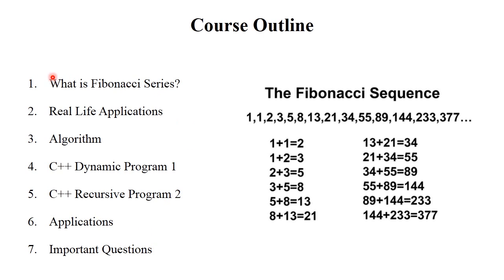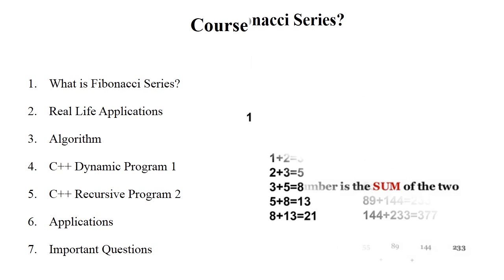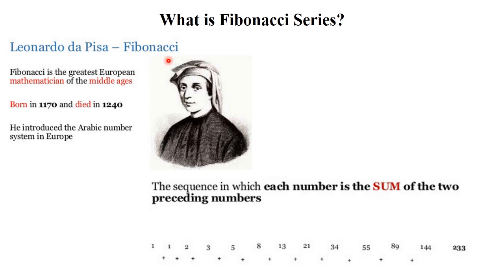Fibonacci series was invented by Leonardo da Pisa. Fibonacci was the greatest European mathematician of the Middle Ages, born around 1170 and died in 1240. He introduced the Arabic number system in Europe. So what exactly does Fibonacci series mean? Fibonacci series is the sequence in which each number is the sum of the two preceding numbers.